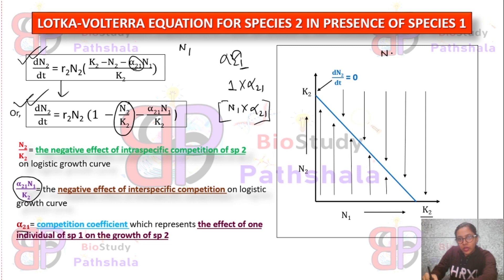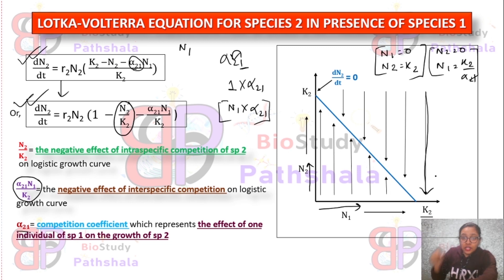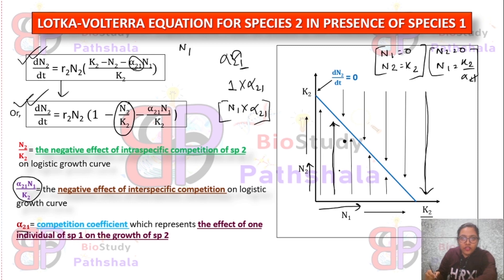Putting N1 = 0 gives N2 = K2, and putting N2 = 0 gives N1 = K2/α21. Plotting these values gives the isocline graph for species 2 (dN2/dt = 0). Points below the isocline show a positive effect on species 2 population, while points above the isocline show a decrease or negative effect on the population of species 2.